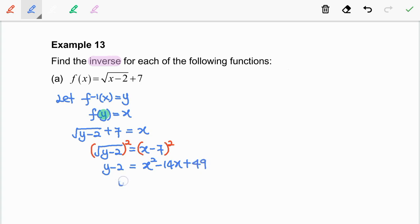So y equals x squared minus 14x plus 51. We know that f inverse equals y, so the answer for f inverse is x squared minus 14x plus 51.